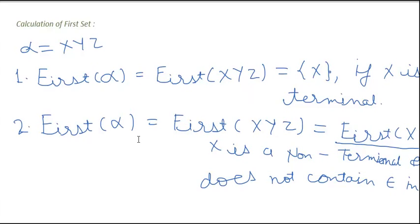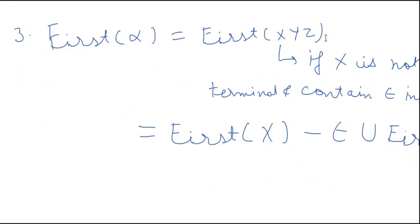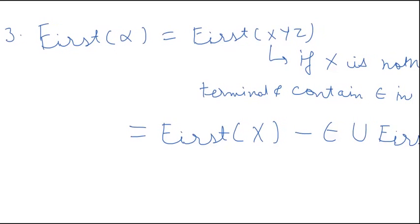The second rule is: First(alpha) is equal to First(xyz), where x is a non-terminal and yz may be terminals or non-terminals. This uses First(x) if and only if x does not contain epsilon. In the third rule, x is a non-terminal but contains epsilon, so it gives First(x) minus epsilon, union First(yz). Now coming to the examples we will see today.